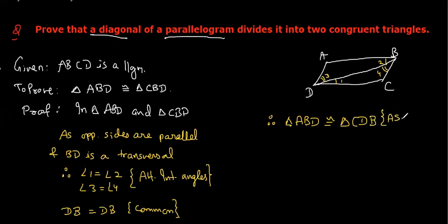Angle-Side-Angle congruency, and we needed to prove this, hence they are congruent. Another way: opposite sides are equal - this side equals this side, and the diagonal is common. Hence by SSS criteria, these two triangles can also be proven congruent. That way is also correct. Any doubt? No sir.